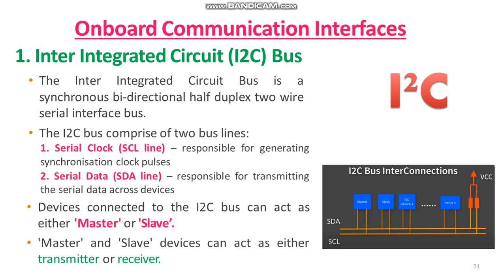Devices connected to the I2C bus can act as either master or slave. The master is responsible for controlling the communication by initiating or terminating data transfer, sending data, and generating necessary synchronization clock pulses. The slave waits for commands from the master and responds upon receiving those commands. The master and slave devices can act as either transmitter or receiver, but the synchronization clock signal is always generated by the master device only.